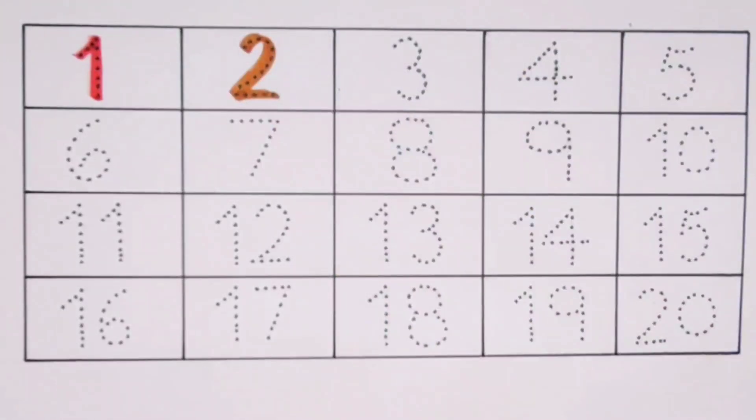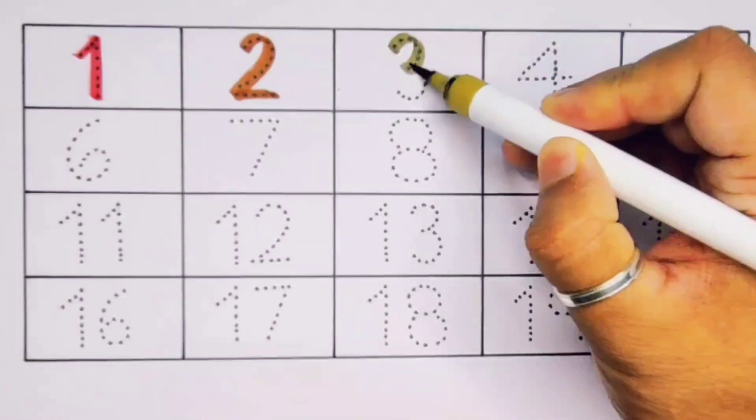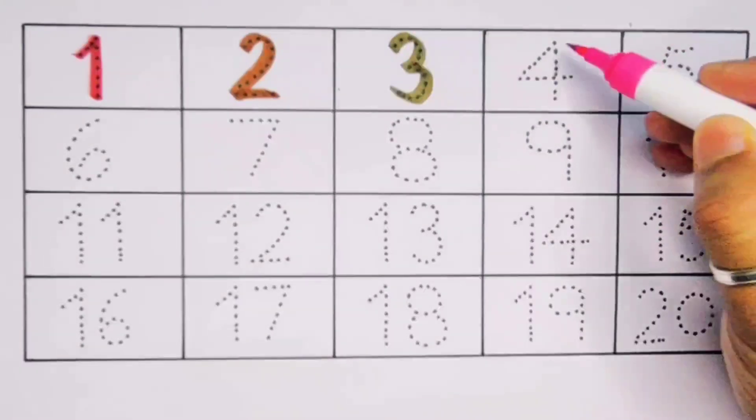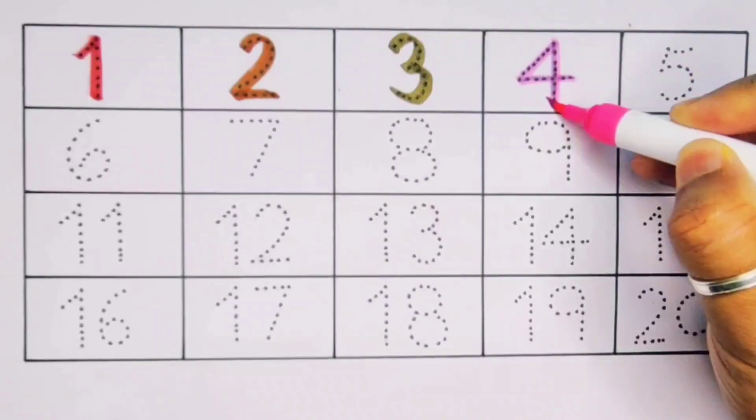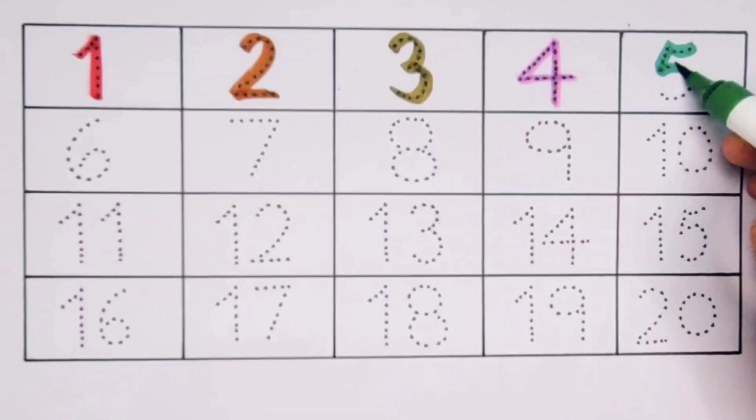Next kids, it's 3, number 3. Next 4, number 4. Next kids, it's 5, number 5.